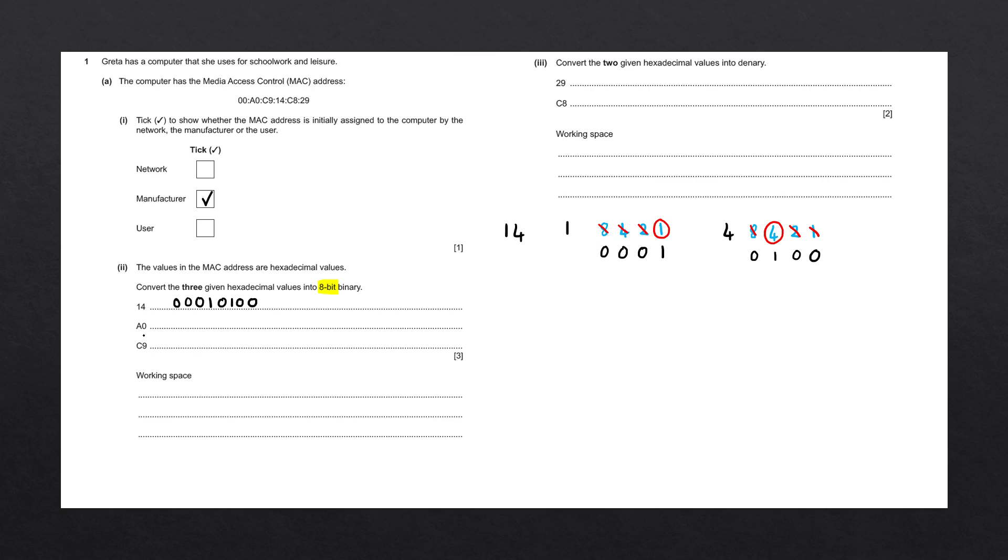Next number we have A0. First number we have A. A is not a denary number, meaning we need to convert it into denary first. If we remember the conversions for hexadecimal and denary, we can write them down here. As we said earlier, the first 10 digits of hexadecimal are just denary. Thereafter we have A, B, C, D, E, and F, which correspond to the values 10, 11, 12, 13, 14, and 15 in denary.